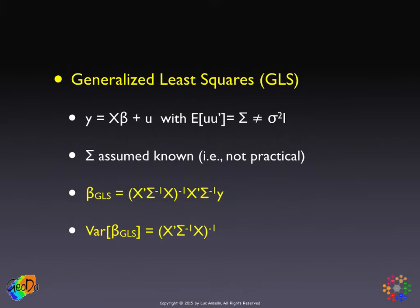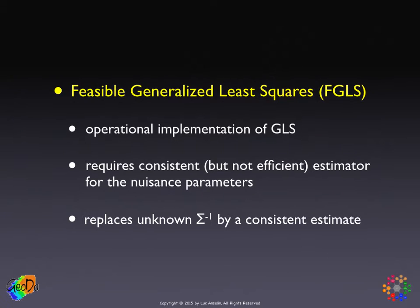Sometimes the notation is slightly different where a scaling factor is applied to the general variance-covariance matrix to ensure that the sum of the diagonal elements equals the number of observations, keeping similarity with the standard sigma-squared I case, but we're not going to dwell on that. GLS is fine in theory but impractical. Feasible generalized least squares, or FGLS, is the operational implementation of GLS. A key property we exploit, already discussed in the context of maximum likelihood estimation, is that because the variance-covariance matrix is block diagonal between the model parameters and the error terms, we only need a consistent estimate of the nuisance parameter, not necessarily an efficient one.